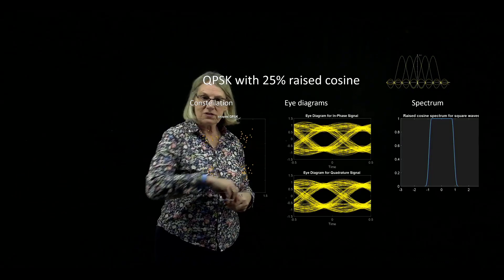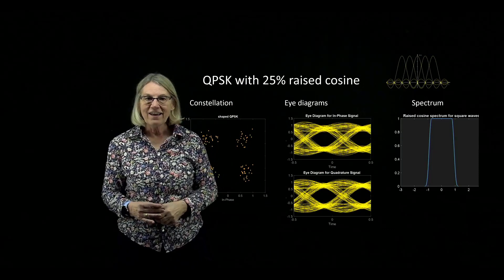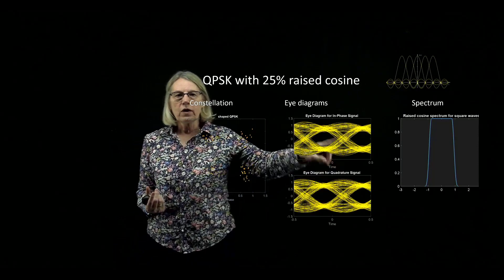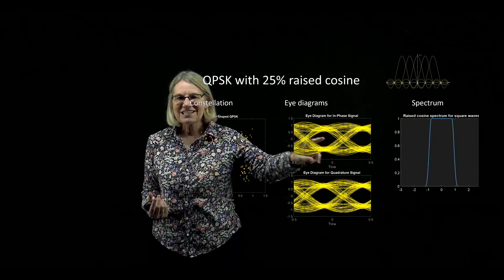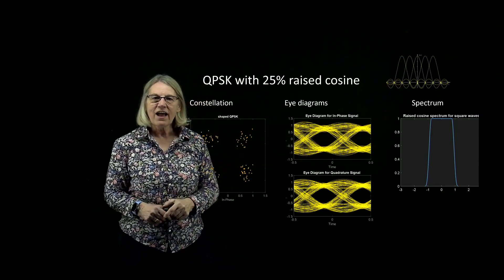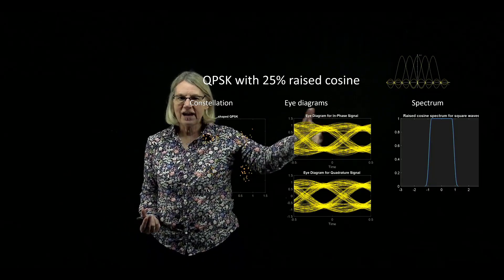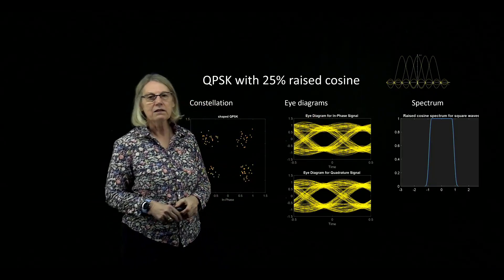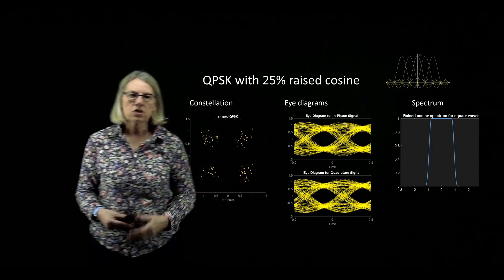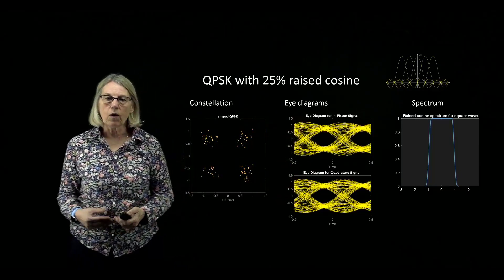Why do we call it an eye diagram? It's because this actually looks like the form of a human eye and it's a quick indicator of the quality of my signal. If there are no transitions occurring at the center, we say the eye is open and I know I will have reliable communications. If the eye ever closes — meaning transitions are happening in the middle — then I'm going to have very poor performance. An eye diagram is a simple way of getting a quick look at the quality of the signal.